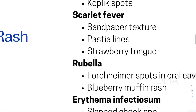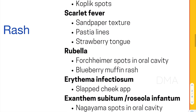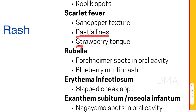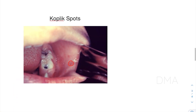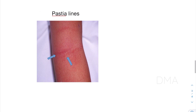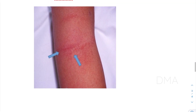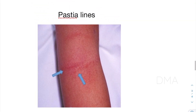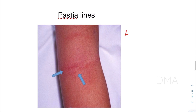Then comes scarlet fever. In the case of scarlet fever, the rashes take a sandpaper-like texture, and you can also see Pastia's lines and the strawberry tongue. Pastia's lines are red lines on the flexor aspects of the body, especially near the elbow, axilla, and the knee.